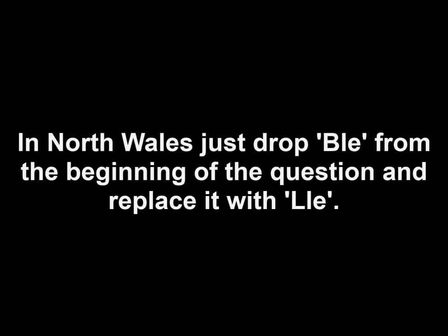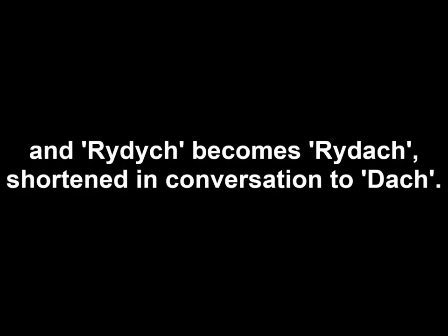In North Wales this formal form of the sentence is very slightly different to the South Walian. Instead of using 'ble' for 'where', they tend to say the similar-sounding 'lle', and 'rydych' becomes 'rydach', which we shorten to 'dach'. So: Lle dach chi'n byw? — Where do you live?